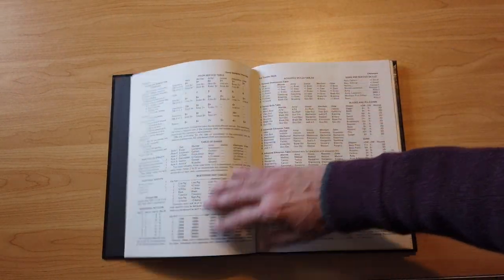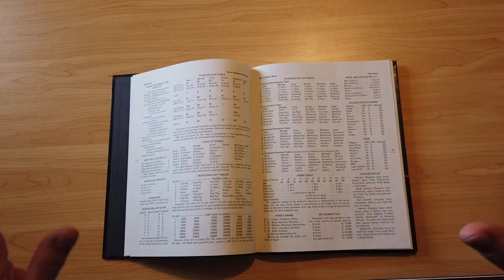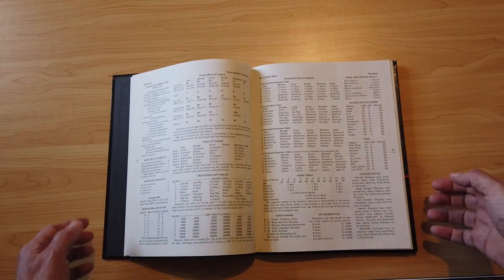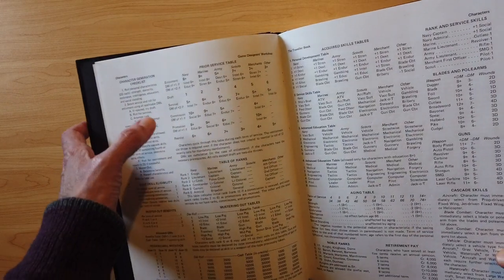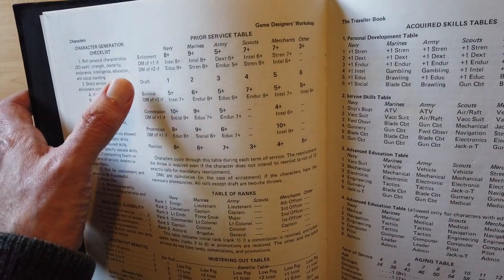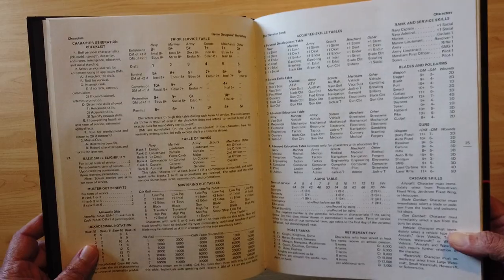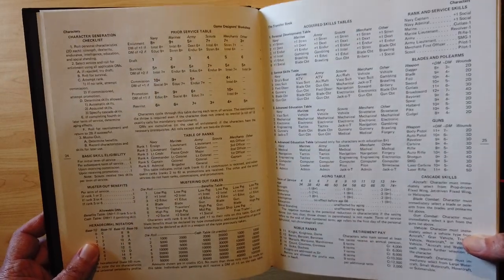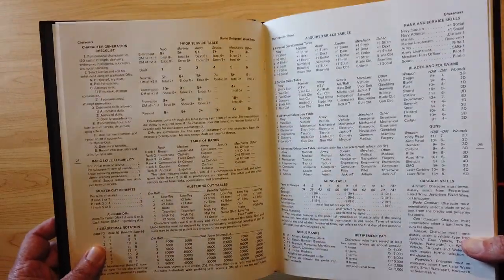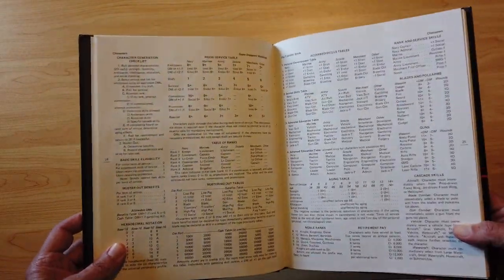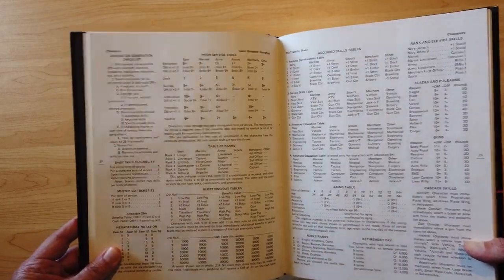And there was a table, or a bunch of tables, to help you create your character. Now, Traveler is famous, or maybe infamous, for character generation. Because there is a, yes, that does say survival. You have a survival role when you start making your character. Yes, it is possible for your character to die in character creation. There is an alternate rule that if you don't make the survival role, you are just injured and you don't die in character creation. But actually, it's kind of cool because character creation is almost like a little mini-game.